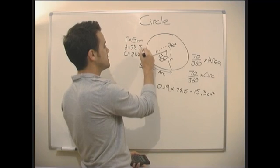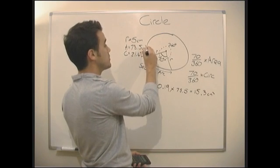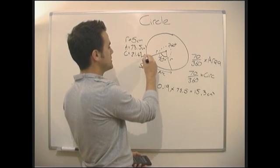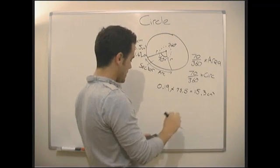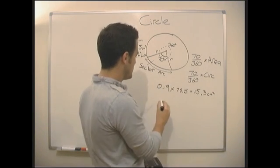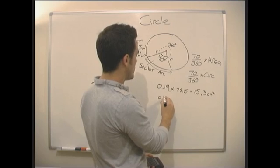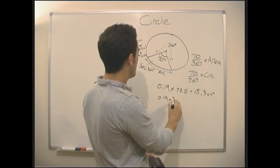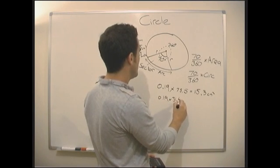So the radius is going to be 5 centimeters, the area is going to be in centimeters squared, the circumference is just going to be in centimeters. And then for the circumference, we've just got 0.19 times by 31.42.